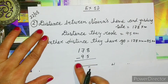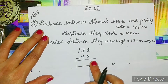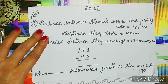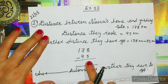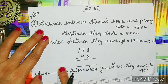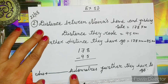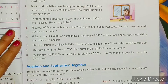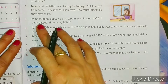Students, you have to fill this blank after calculation. Whatever number comes, the same number you have to fill in the blank space while writing the answer. You will write: kilometers further they have to go. Now let's move on to question number three.